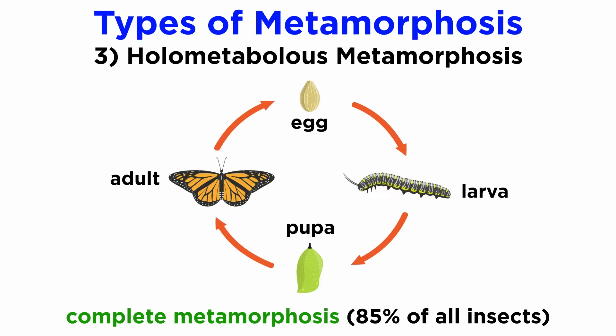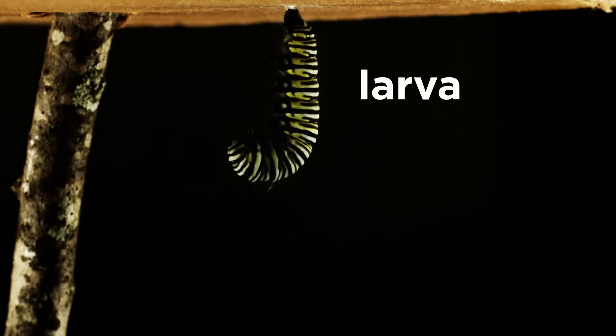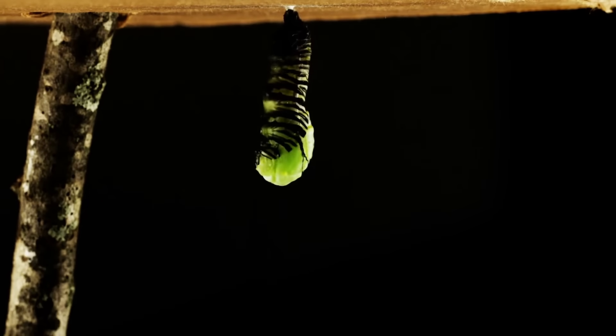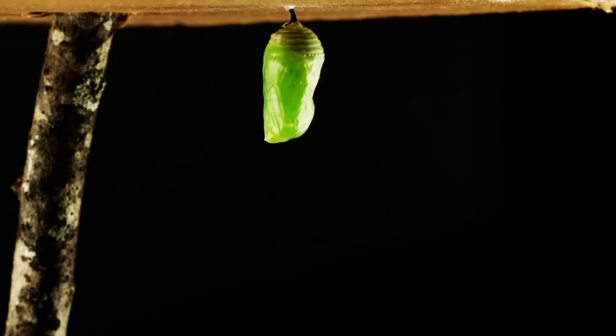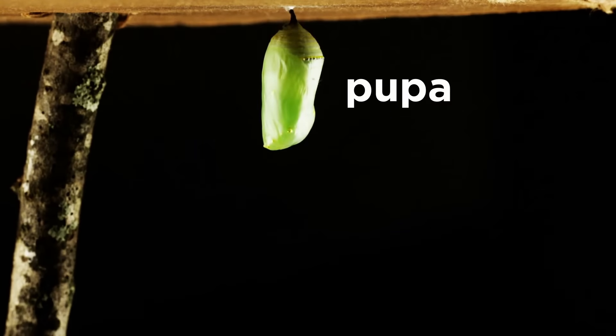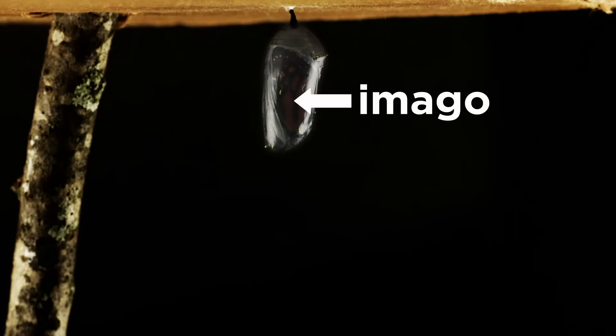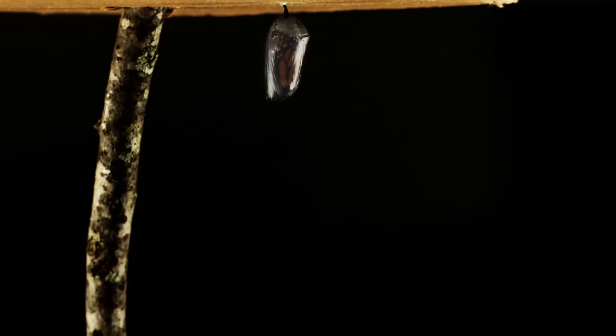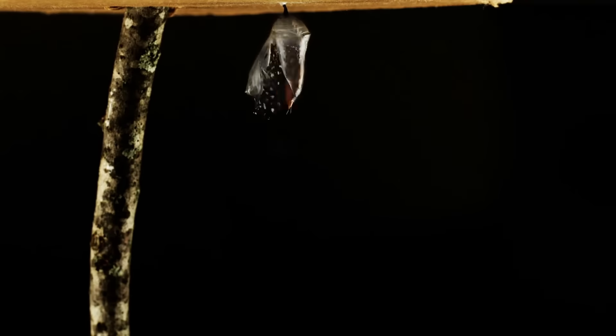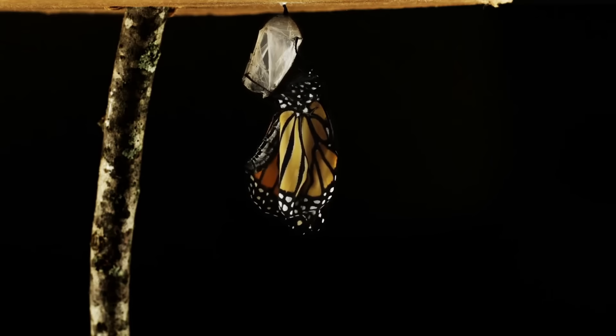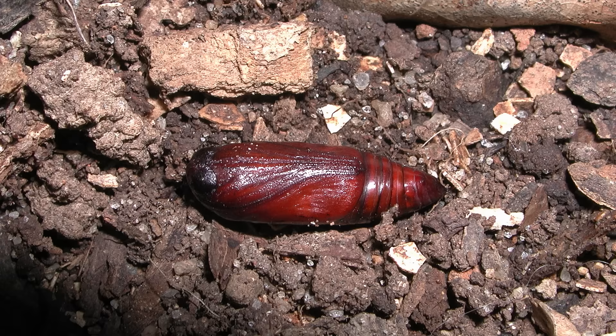Finally, holometabolous, or complete metamorphosis, is undergone by more than 85% of all insect species. Here, the insects hatch from an egg as a larva, also called a caterpillar, grub, or maggot, that develops and grows, eventually creating a pupa, also called a cocoon or chrysalis in some species, from which an adult, or imago, emerges. This cycle is notable in that within the pupa, the entire body of the insect often liquefies before reforming as an adult. In temperate regions, many insects overwinter as pupae that give rise to adults in the spring. The processes of development and molting are done mainly by the nervous and hormonal systems.